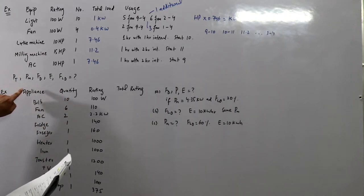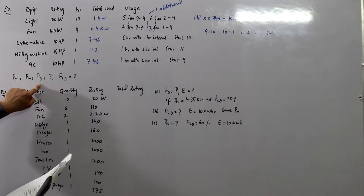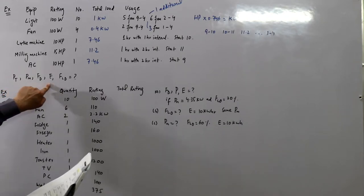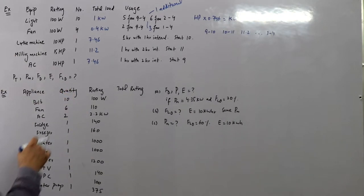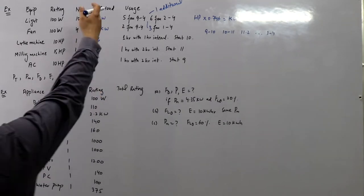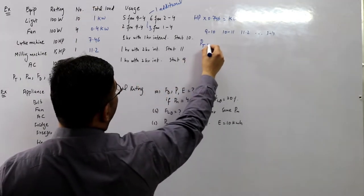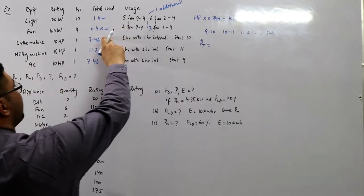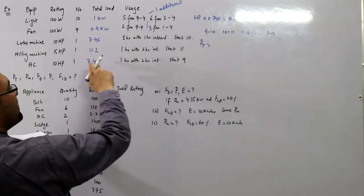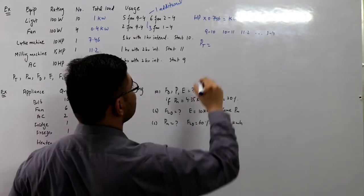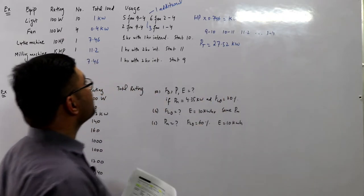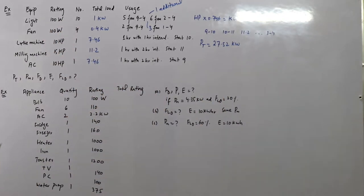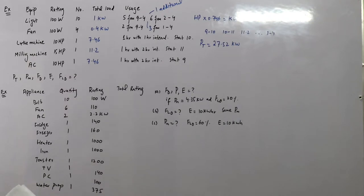The question asks to find: the connected load, the maximum demand, the demand factor, daily energy consumption, and the load factor. The connected load pt = 1 + 0.4 + 7.46 + 11.2 + 7.46, which comes out to be 27.52 kilowatts total connected load to the system.